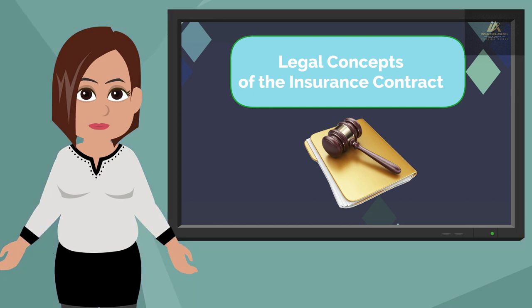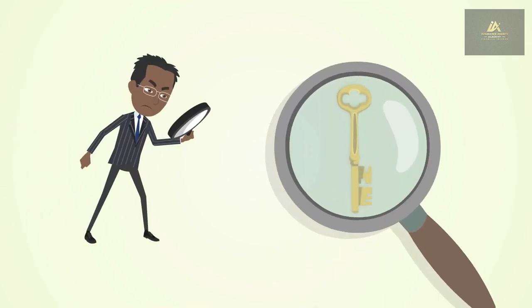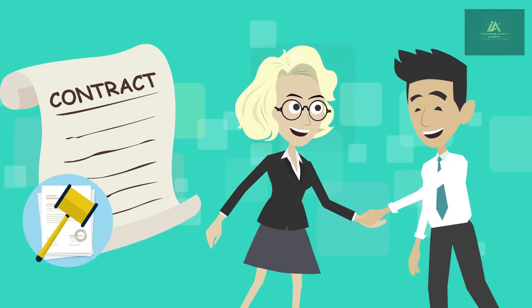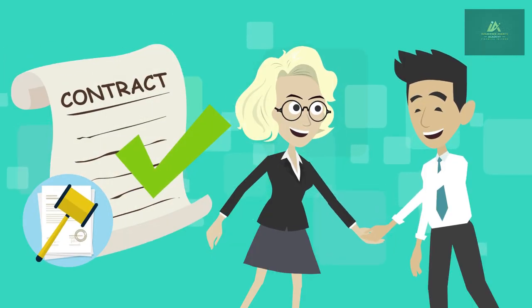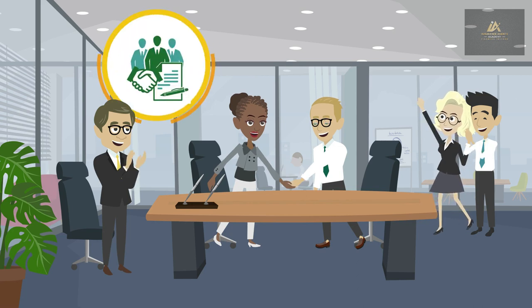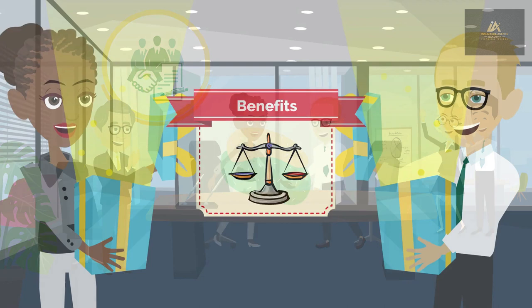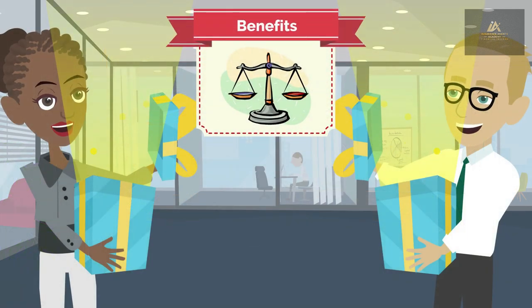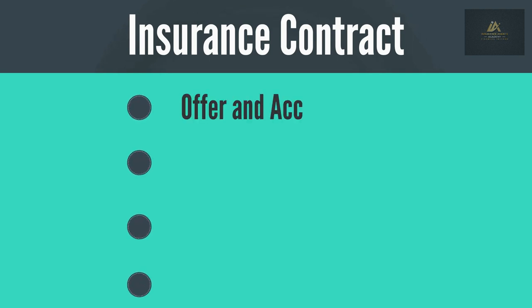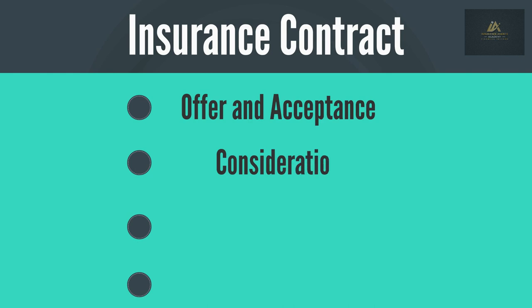You have now learned the legal concepts of the insurance contract. Let's review some of the key areas in this section that will help you prepare to pass. Insurance policies are legal contracts. Contract law defines a contract as a legally binding agreement between two or more parties where a promise of benefits is exchanged for a consideration. In order for an insurance contract to be legally binding, it must have four essential elements: offer and acceptance, consideration, legal purpose, and competent parties.